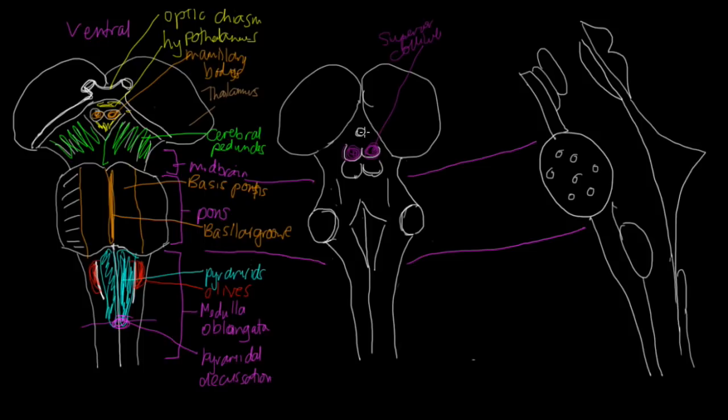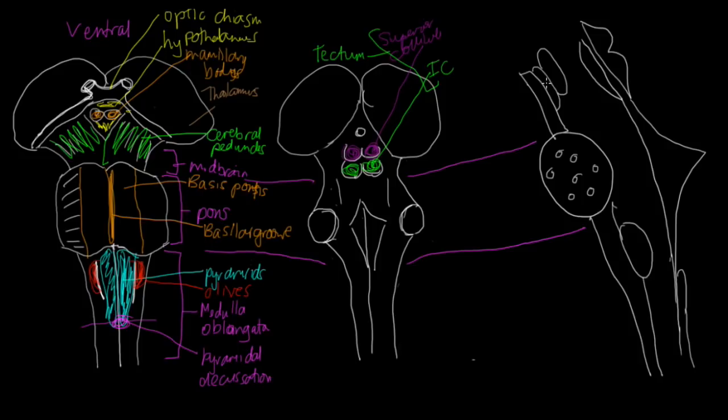Just caudal to the superior colliculi, we've got the inferior colliculi. Together, these structures form what's called the tectum. The inferior colliculus is involved in auditory reflexes. Rostral to the superior colliculus, we've got the pineal gland, which is involved in circadian rhythms.